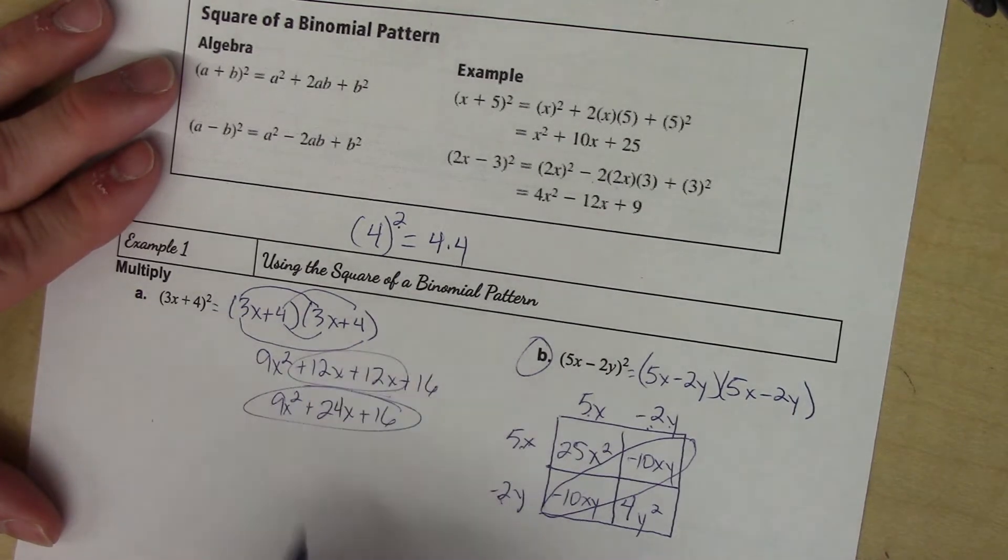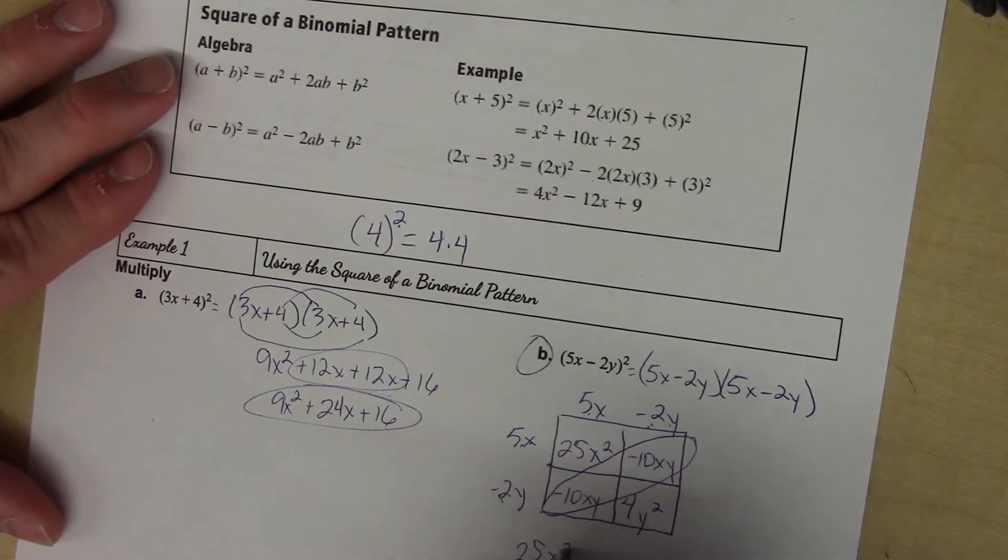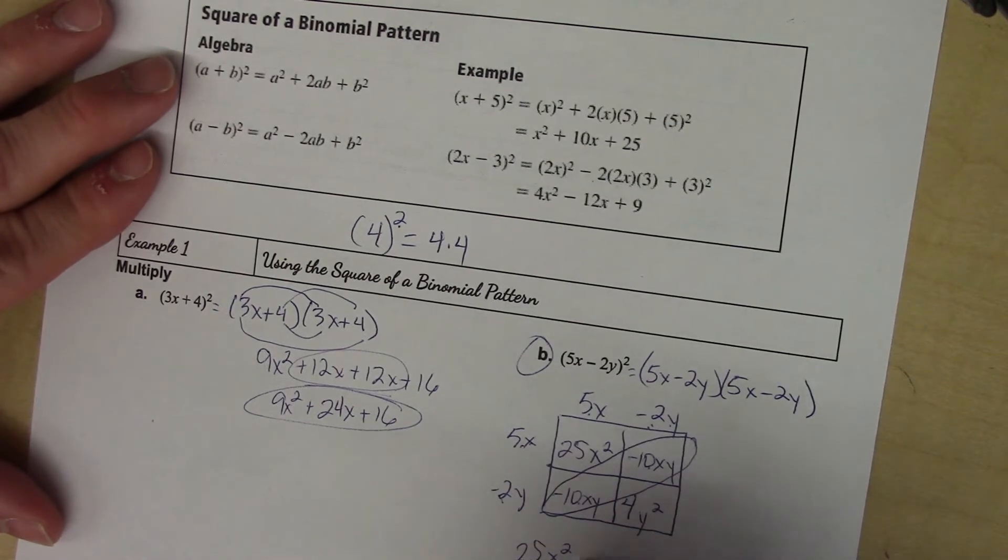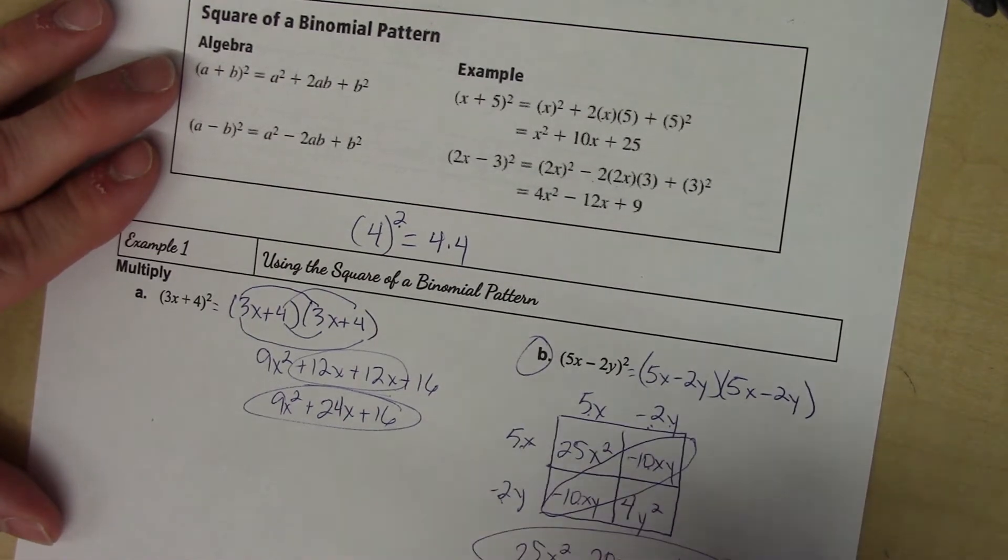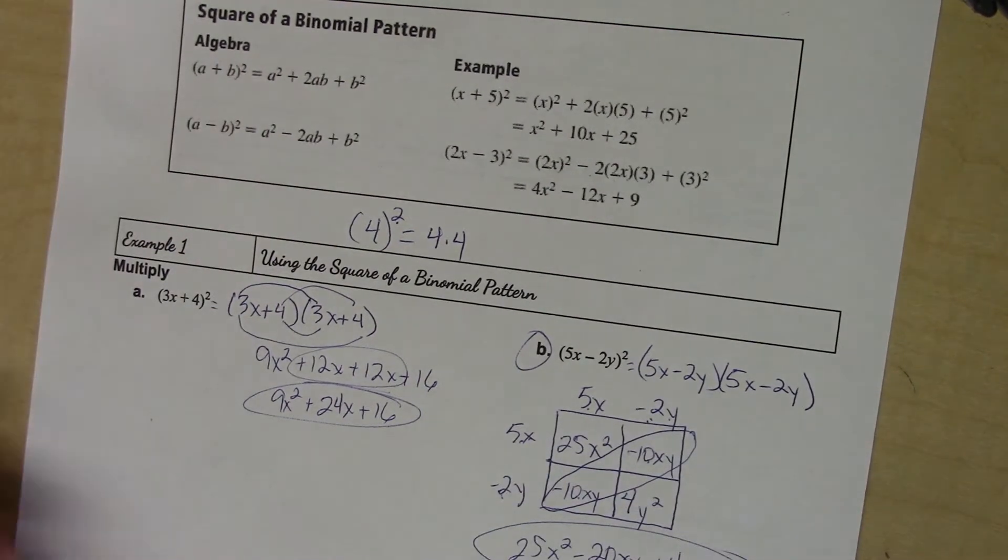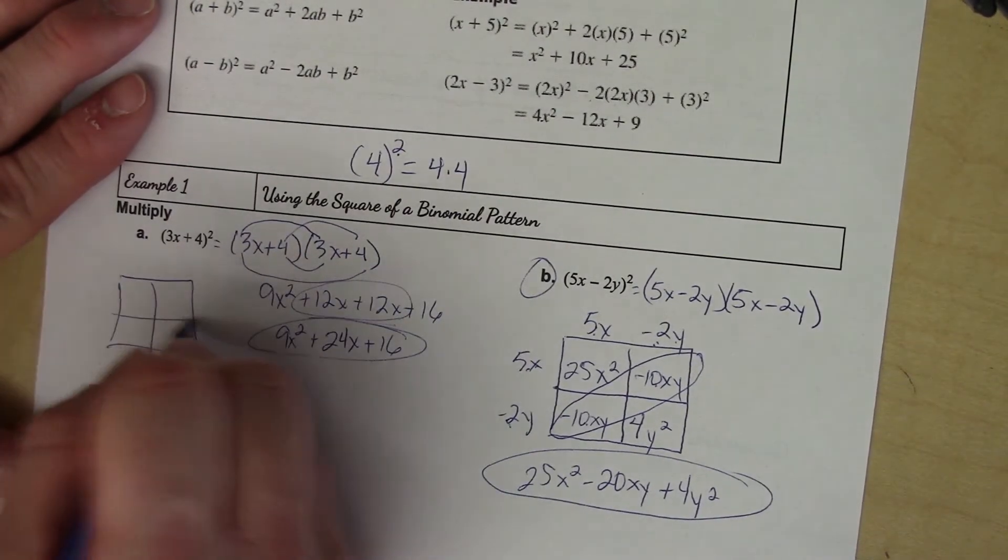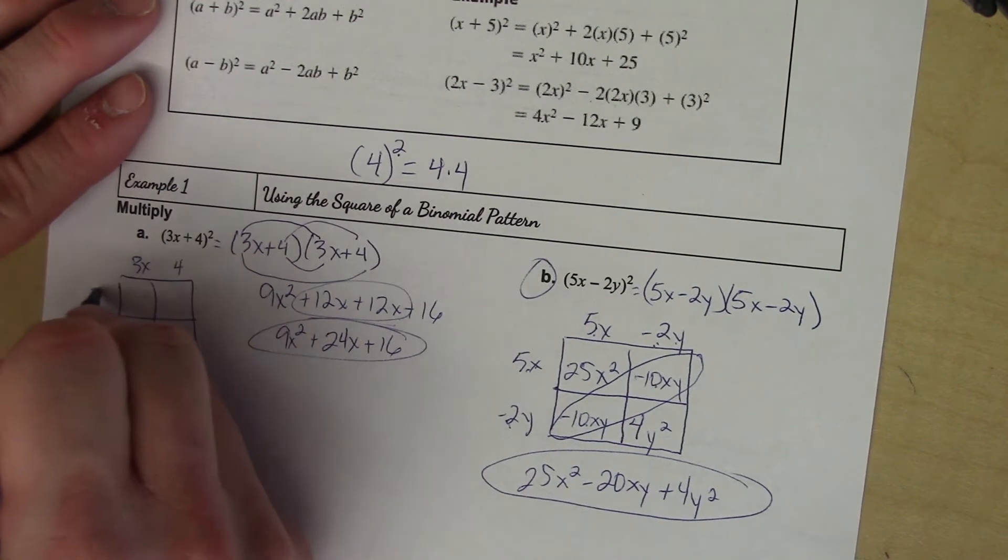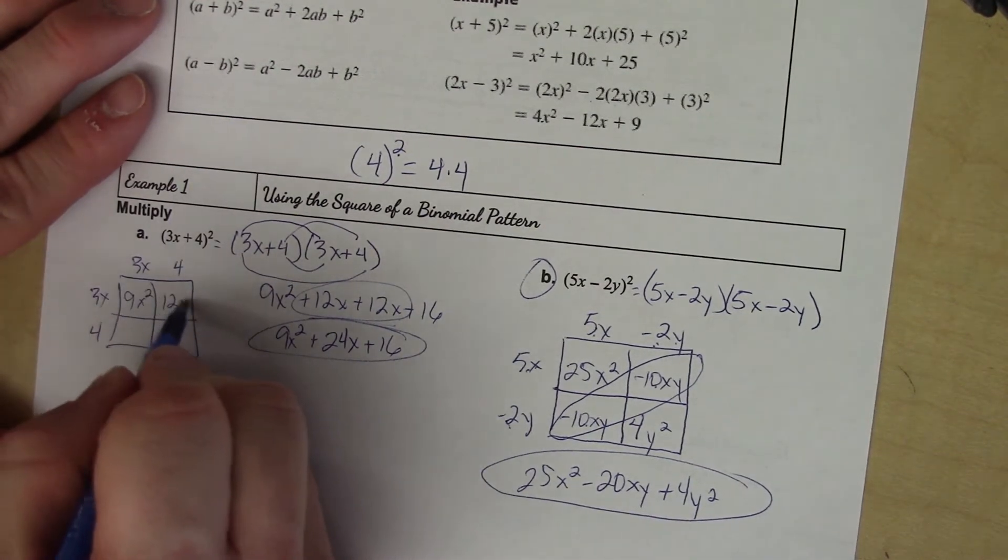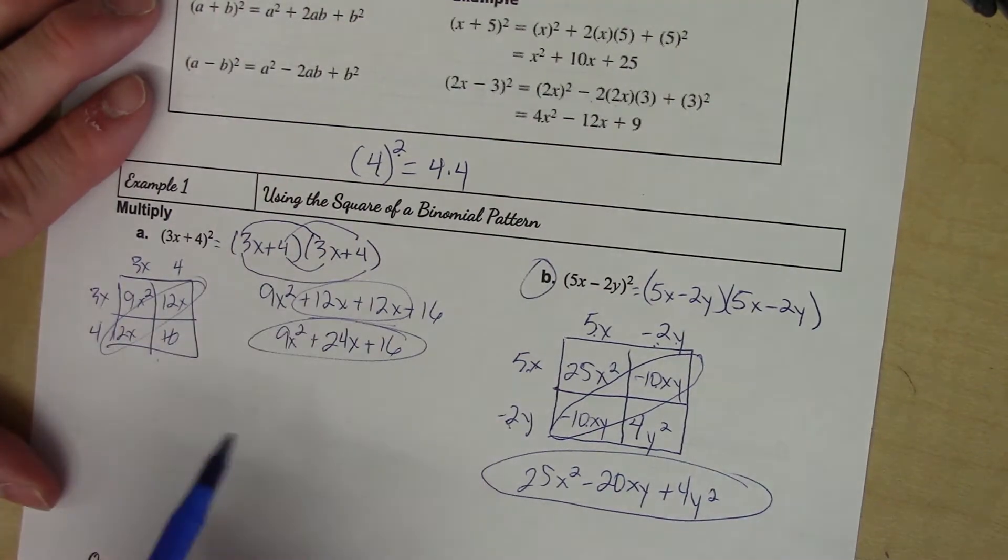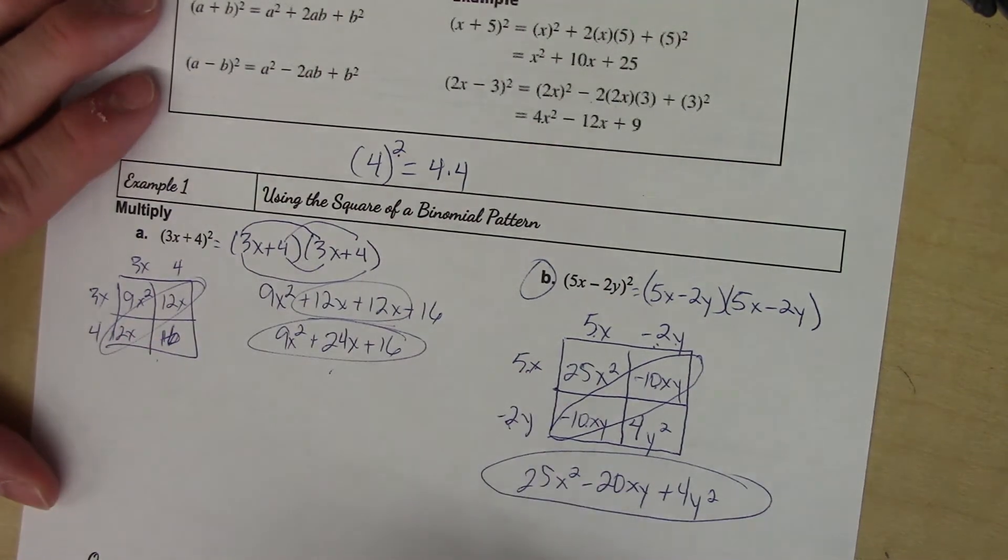If you remember, you can always add on the diagonal, which really is what this ends up being as well. The first term gets written first, -10 and -10 is -20xy, and then +4y². Now it looks a little different because I got multiple letters in here, but it's still the same process. If I'm going to do this super quick with 3x and 4, I start multiplying: 9x², 12x, 12x, and 16. Add on the diagonal, I still get to the same answer.